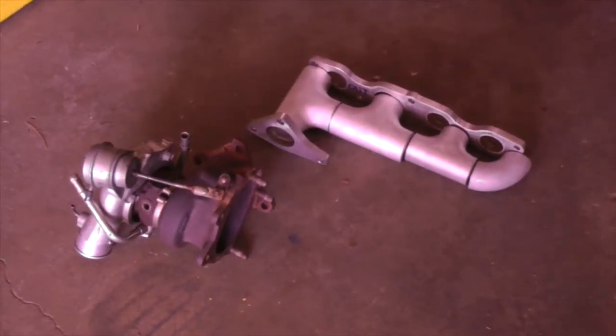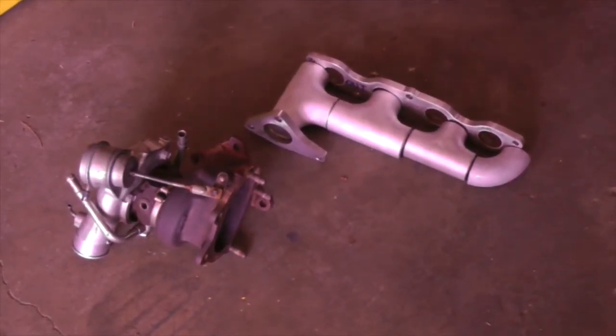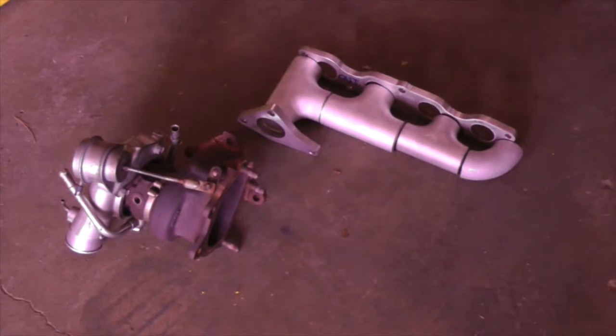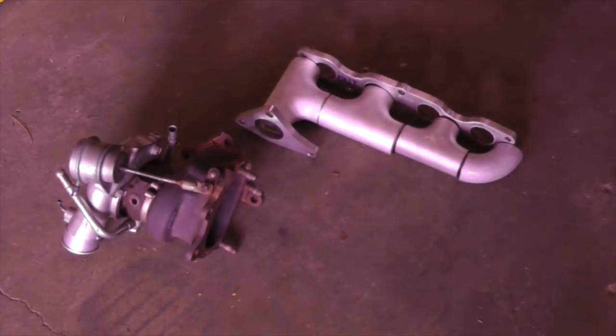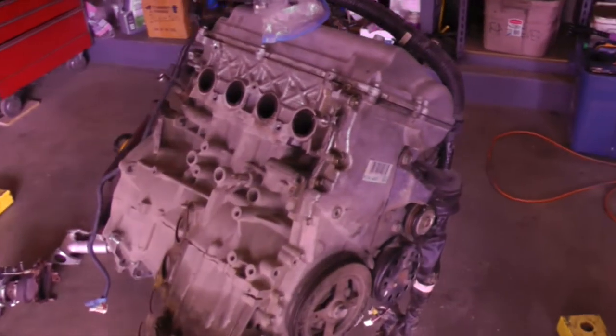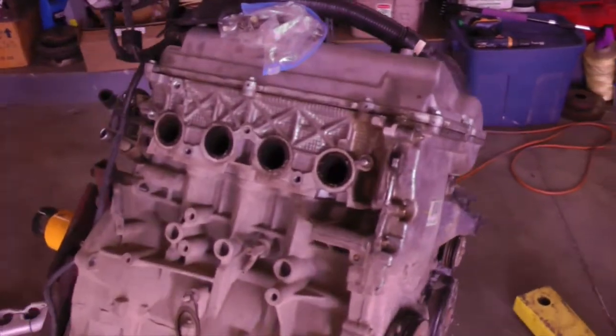I'm building a custom turbo manifold to mount a Mitsubishi TD-04 onto a Toyota 1NZ engine using Schedule 10 stainless T's and bends and stainless flanges purchased on eBay.